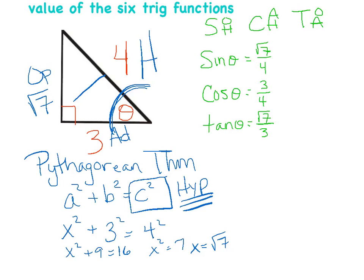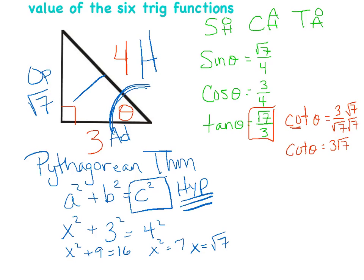That's three out of six — now for the reciprocals. Cotangent of theta is the reciprocal of tangent, so flip √7/3 to get 3/√7. Since we can't leave a radical in the denominator, rationalize by multiplying top and bottom by √7, giving 3√7/7.